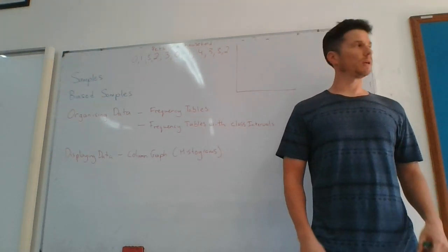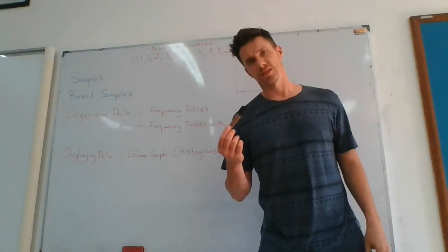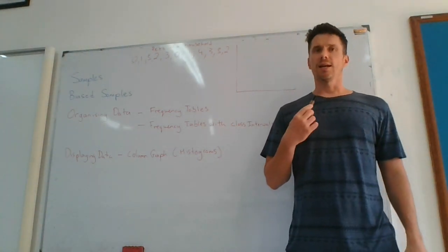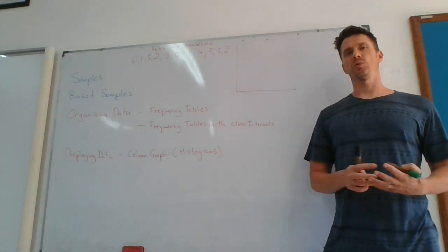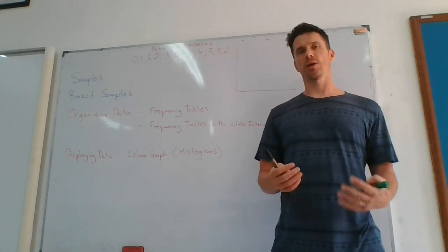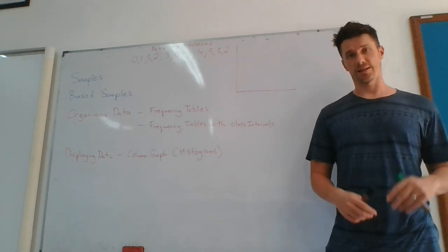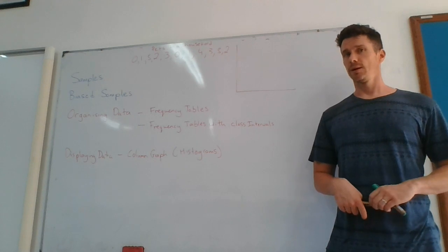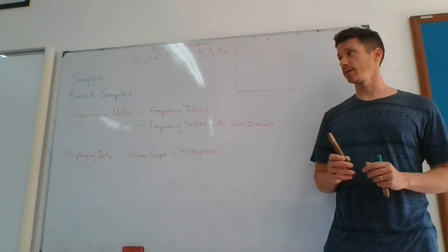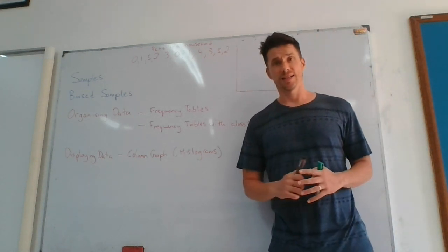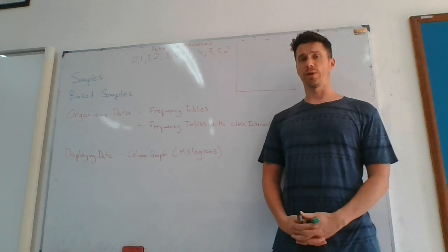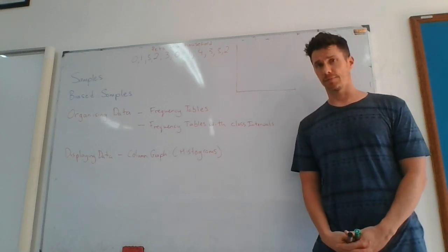So year seven, yesterday we looked at questionnaires as a type of survey. Now out of questionnaires we get some data, so we must look at how to display that data today. Before we start displaying data, we need to look at samples and whether a sample is biased or not.